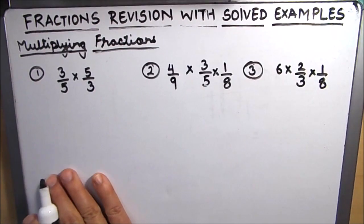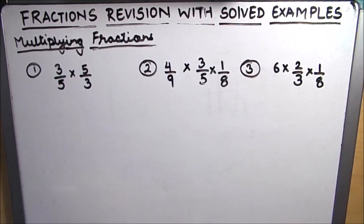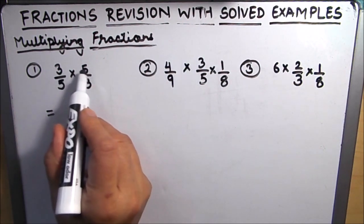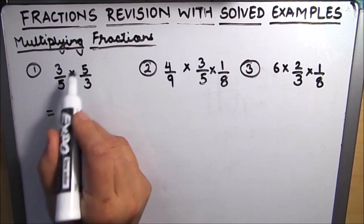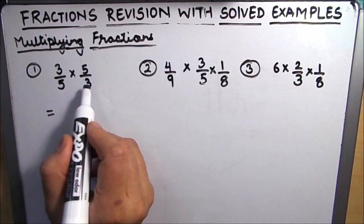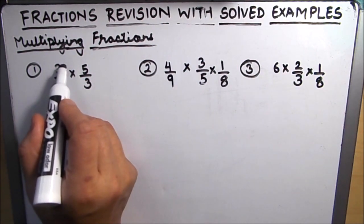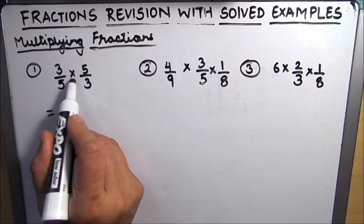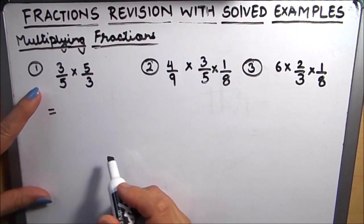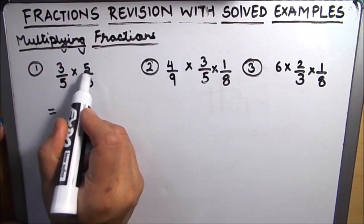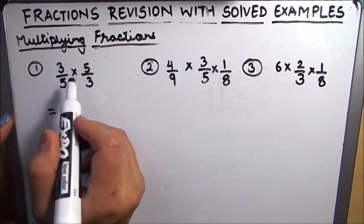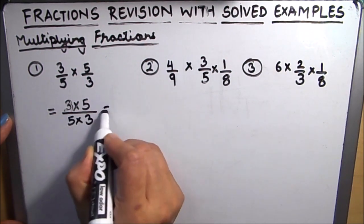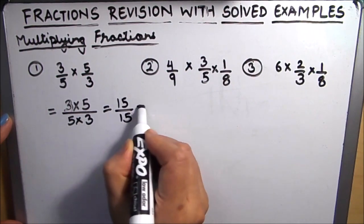Next is multiplying fractions. For multiplying fractions, we multiply the numerator by the numerator of the other fraction and the denominator by the denominator of the other fraction. We can also cancel out or divide a numerator with a denominator of any fraction when there is a multiplication sign in between. The first way: multiply numerator of the first fraction by numerator of the second, giving 3 times 5 over 5 times 3, which is 15 over 15, equal to 1.